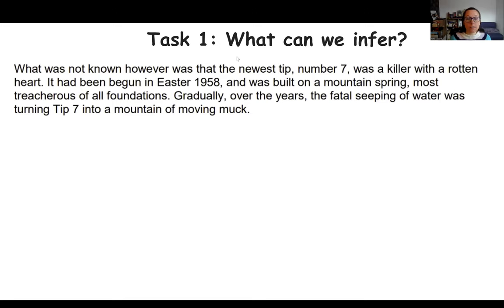So what can we infer from this? Using those five steps, step one, what is obviously going on here? So here the writer is informing us about number seven, tip number seven. We learned that it is one of the newest ones there. We learned when it had begun. We learned about the foundation, and that the foundations are insecure to say the least. And then we've learned that actually, because of the seeping of water, it has made it even more unsteady. That's explicitly what is going on.